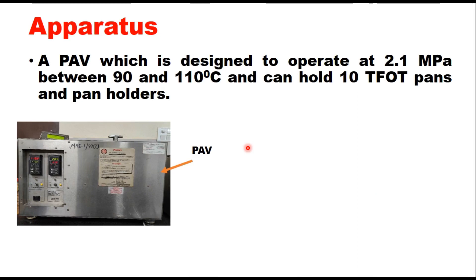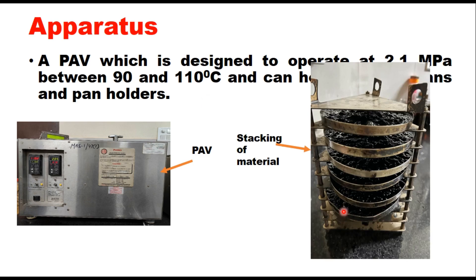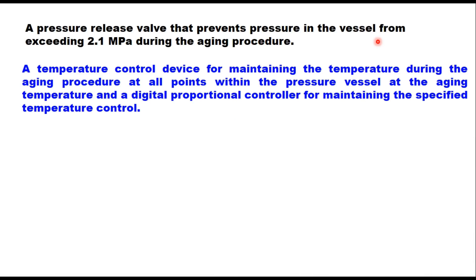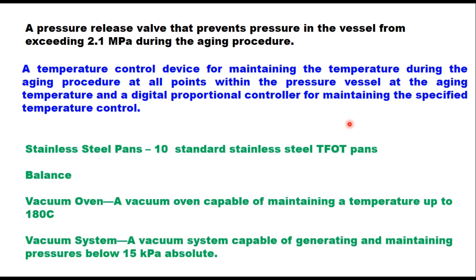The pressure aging vessel is designed to operate at 2.1 MPa between 90 and 110 degrees centigrade and can hold 10 TFOT pans with pan holders. A pressure release valve prevents pressure from exceeding 2.1 MPa. A temperature control device and a digital proportional controller maintain the specified temperature throughout the vessel. The apparatus also includes stainless steel pans, a balance, a vacuum oven capable of up to 180 degrees centigrade, and a vacuum system maintaining pressure below 15 kPa absolute.